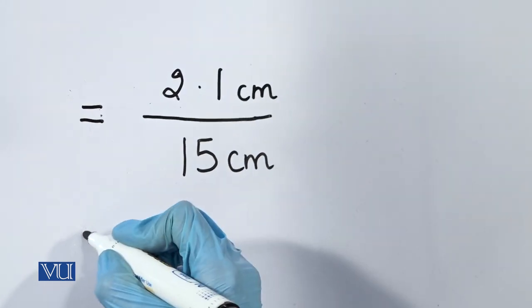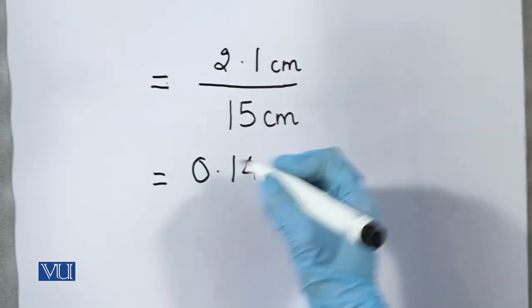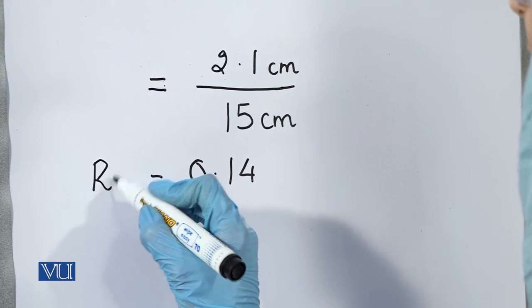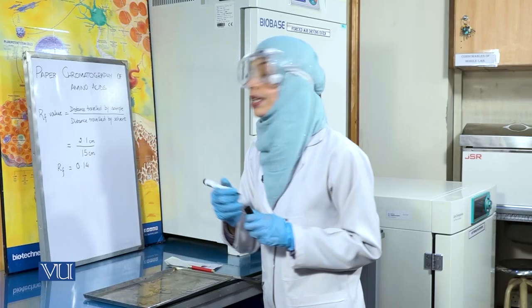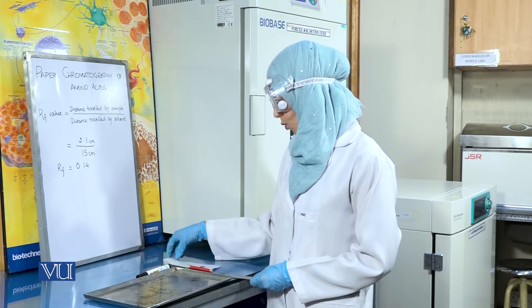Hence, the RF value comes out to be 0.14, which is the RF value for the amino acid lysine. Therefore, we can identify that our sample contained the amino acid lysine.